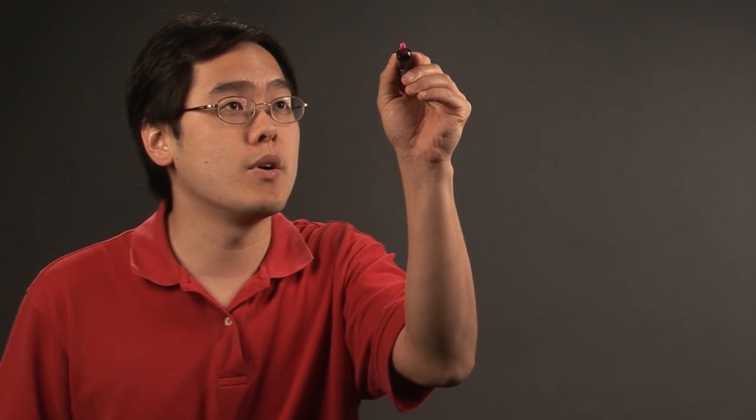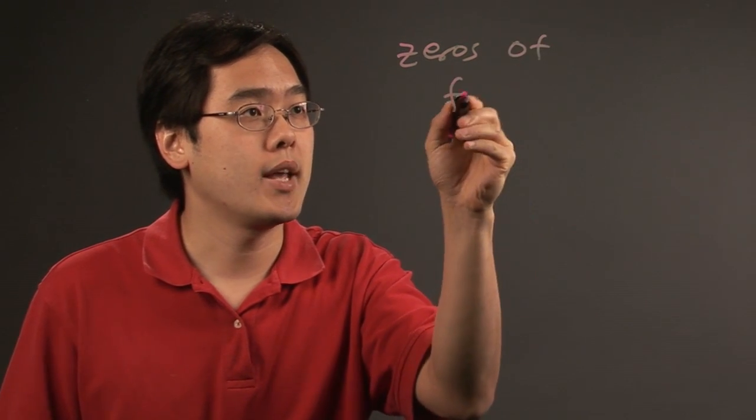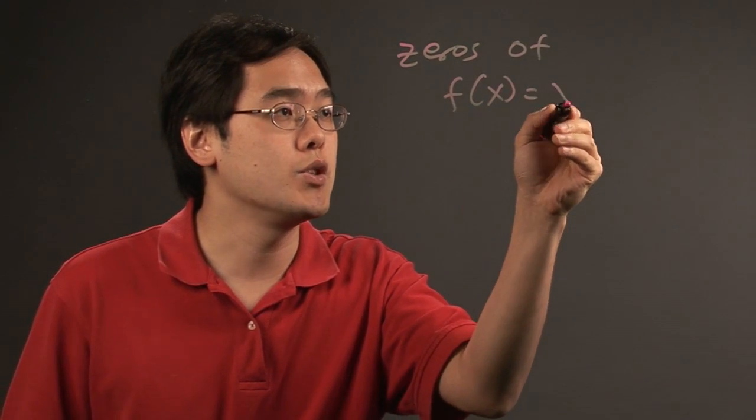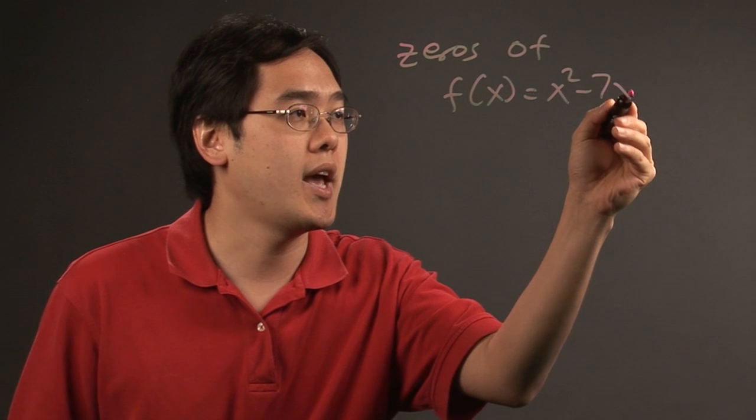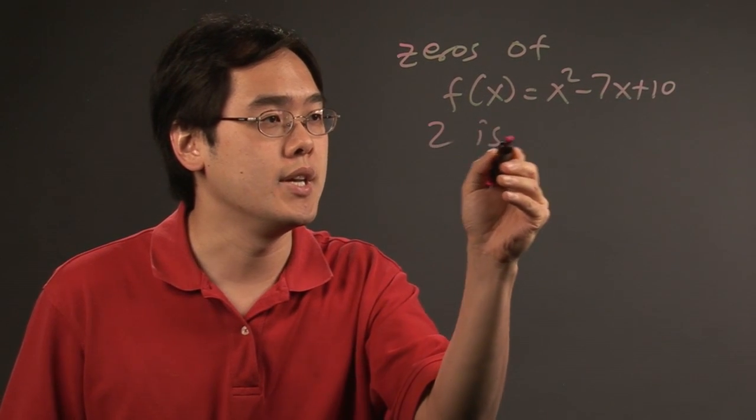So let's do an illustration and you'll see what I mean. Suppose you want to find the zeros of the function f is equal to x squared minus 7x plus 10, and you're given that 2 is a zero.